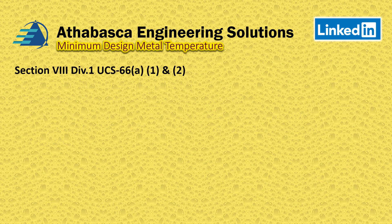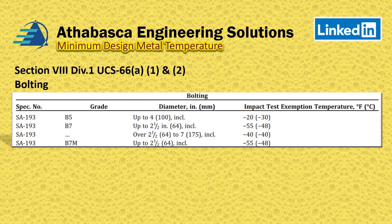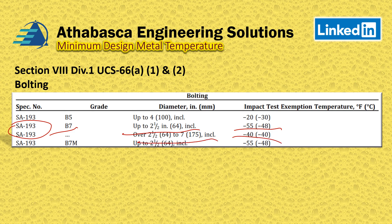For bolting, there is a straightforward table for different material specs. A very common one is SA 193 B7, which is acceptable up to a certain nominal bolt diameter. Beyond that diameter you get a reduction, and again you notice that the thicker the material, the less favorable your MDMT becomes.